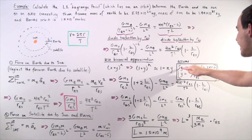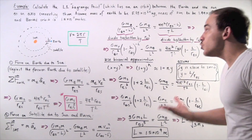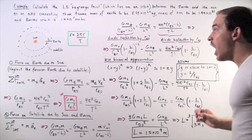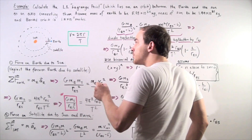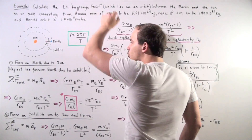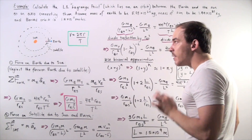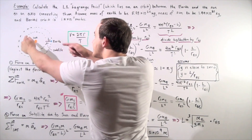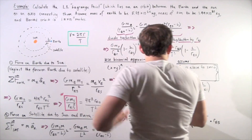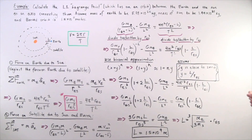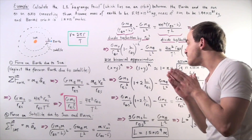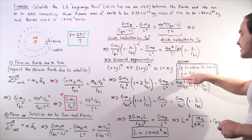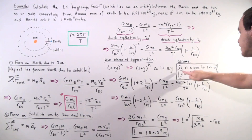Let's make this assumption: suppose y is very, very close to zero. We choose y to be the distance L — the distance from the Earth to the satellite at the L1 Lagrange point — divided by the entire radius of the Earth's orbit. If we take L and divide it by the radius of the Earth's orbit, we see this is a very small number, very close to zero.